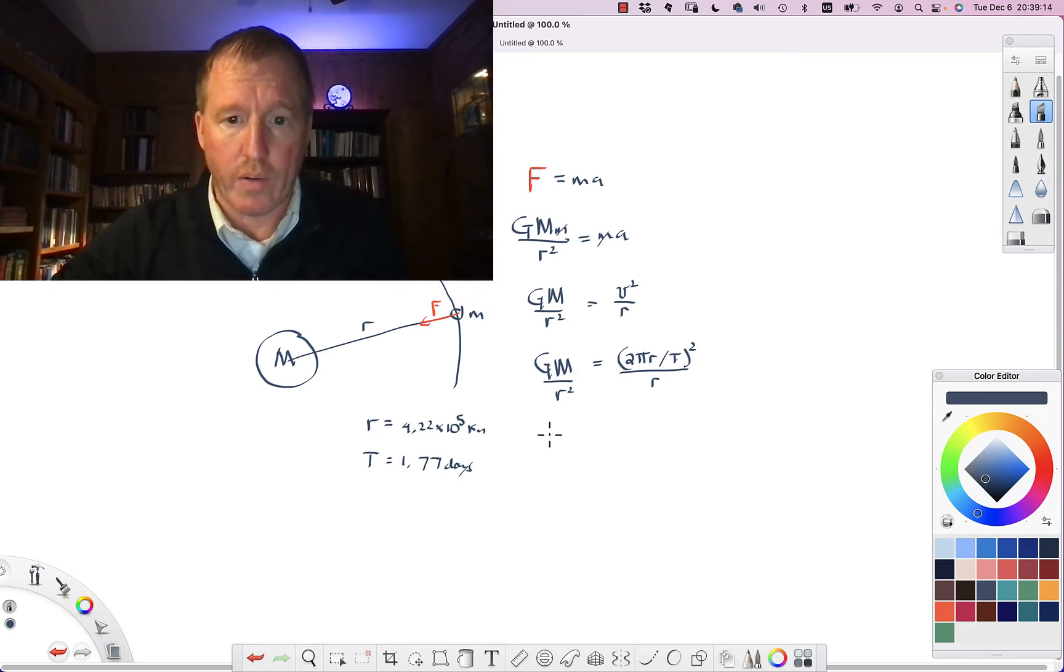We want to solve for M right here, so I'm going to start moving stuff around and simplifying it. So the mass of Jupiter is going to be equal to, let's square the top, so I'll have 4 pi squared r squared.